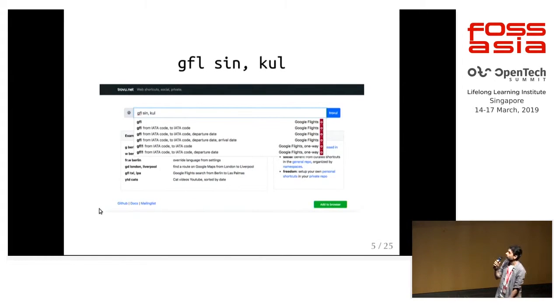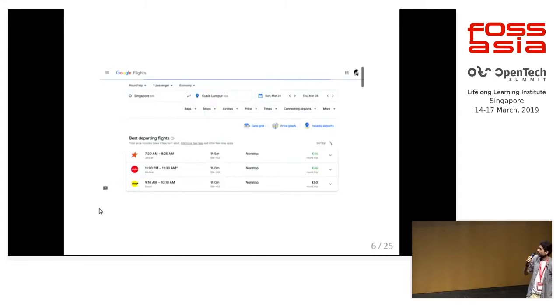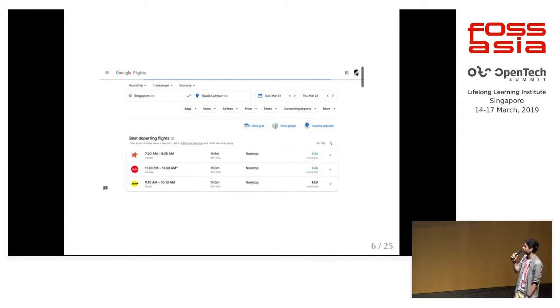We can type in 'GFL SIN,KUL', and it takes us to the Google Flights search for flights from Singapore to Kuala Lumpur.